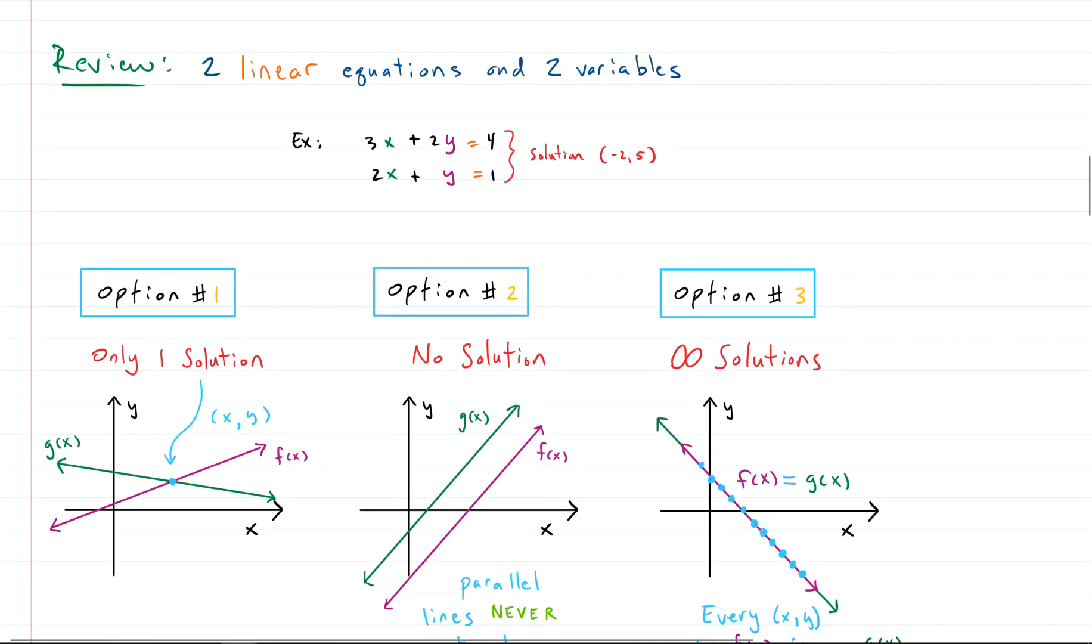Let's talk about two linear equations and two variables. So we have two equations. Both of those equations represent lines. You can see our solution options: one solution if those lines touch in one spot, no solution if the lines are parallel and never touch, or infinite solutions if those lines are the same line and every point on them is a point on the other one as well. This example system is in the option one category, and it touches in one spot: x equals negative two and y equals five.